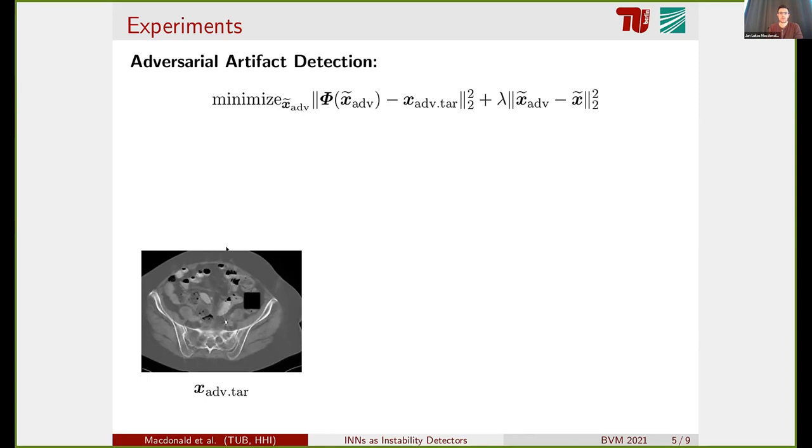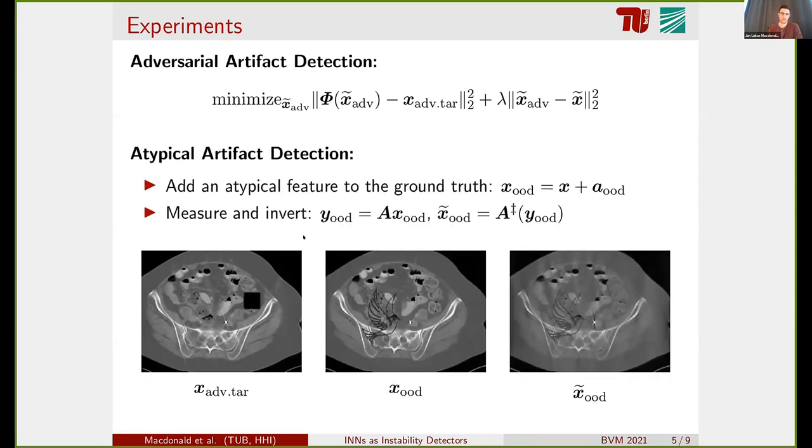The second type of perturbations we consider are out of distribution or atypical artifact perturbations. Here we added something to the original ground truth signal. In this case, the silhouette of a bird. Then we take the Radon measurements and filter back projection reconstruction as before, and now use this modified image as an input to the neural network and see how it reacts to this changed data. This was not done during the training. This was done after the training was finished.